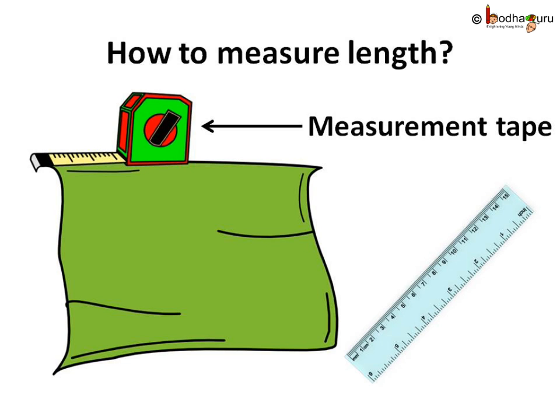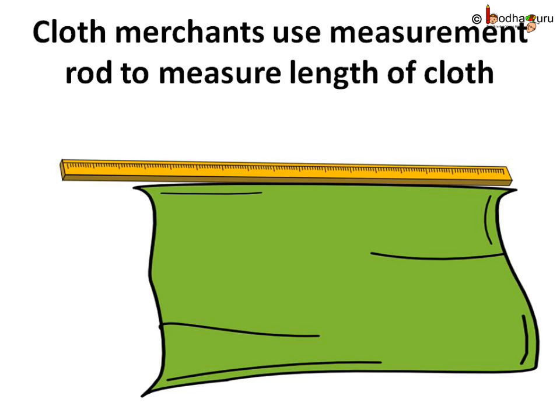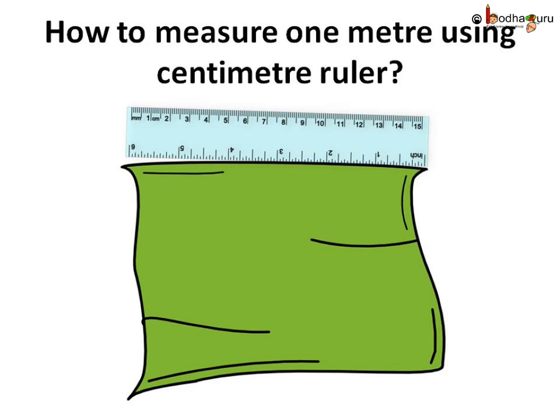So, how can we measure the length? We can measure the length with the help of a ruler, a measuring tape, or a meter rod. For example, to measure cloth, a tailor uses a measuring tape. A cloth merchant may use a measuring rod to measure the cloth, and students like you may use a ruler.